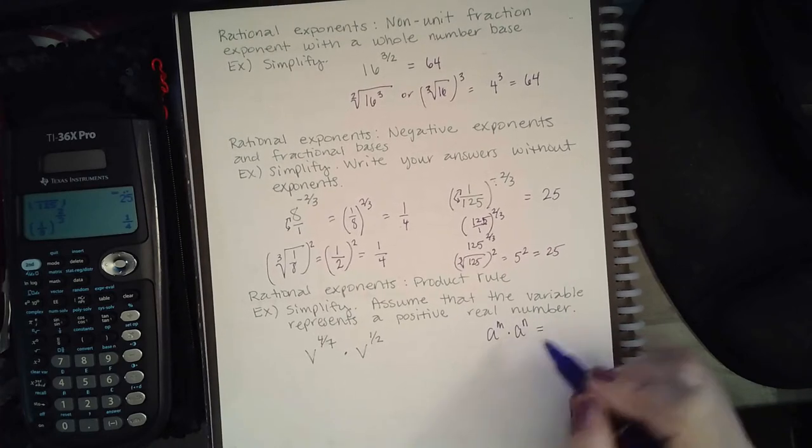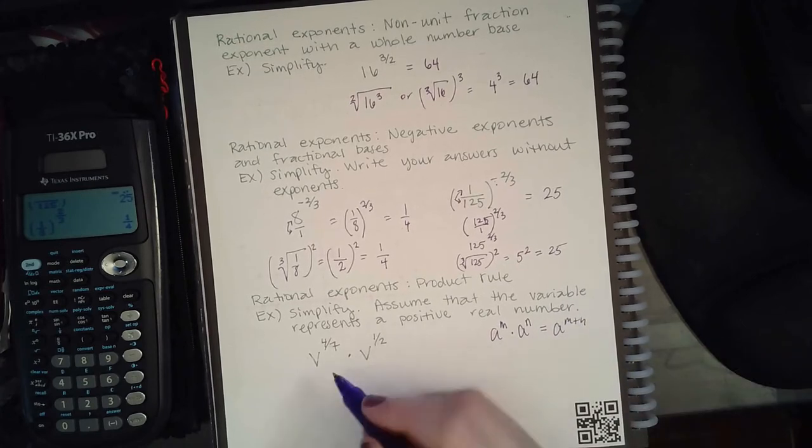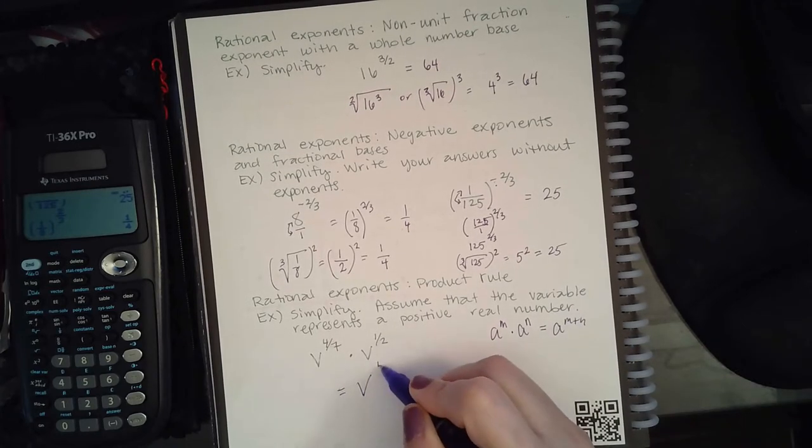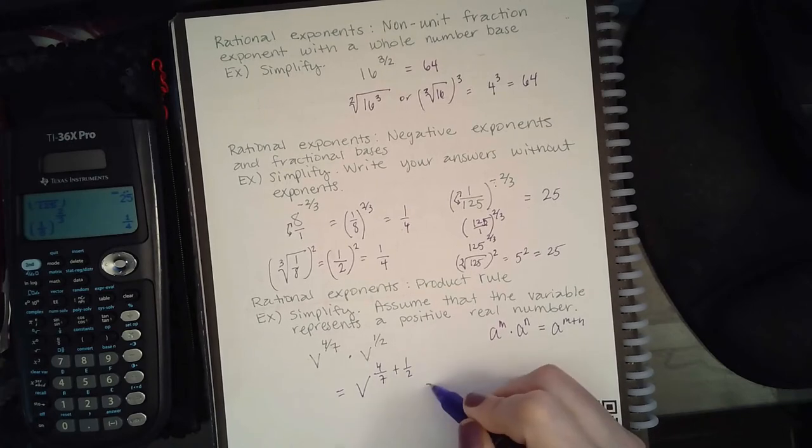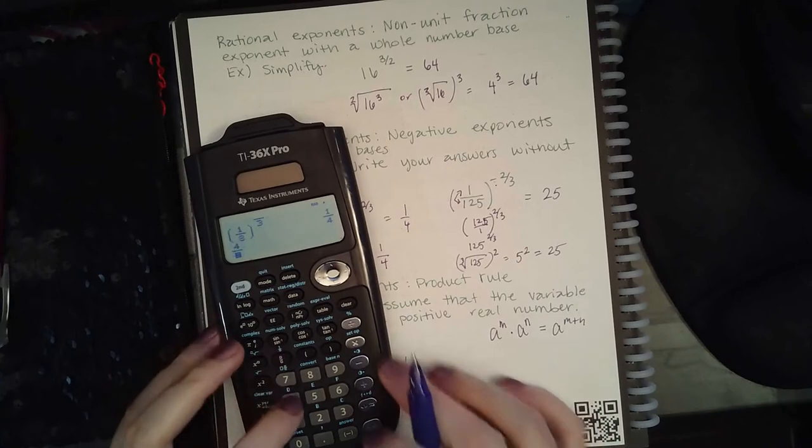So this expression here would become v to the 4 over 7 plus 1 over 2, which if I type that in my calculator, 4 over 7 plus 1 over 2.